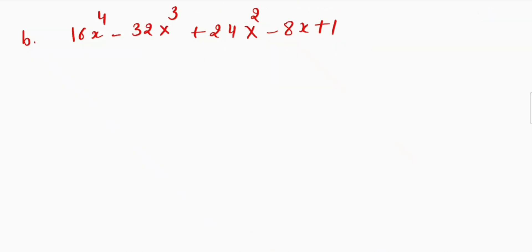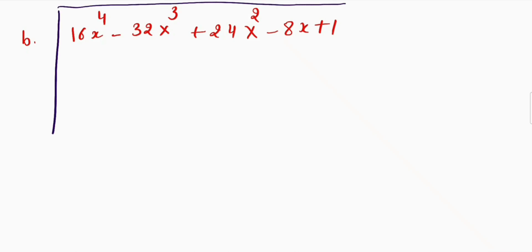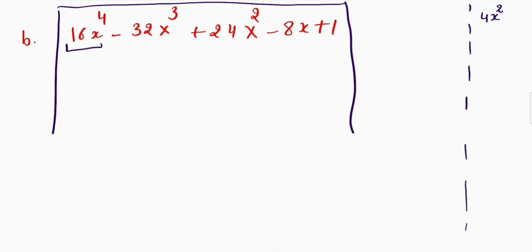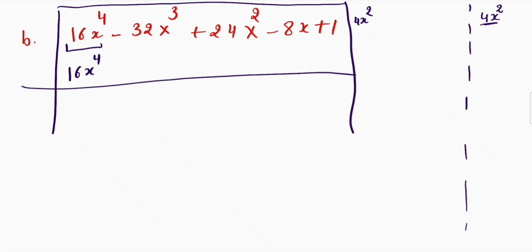Now let's see how we can find the square root of this algebraic expression step by step. First I will put these division lines here. We know 16 can be written as 4, and x raised to power 4 can be written as 4x². So I write 4x² here — if I take the square of this I get 16x⁴. This was the first step, and I will get 0 if I change the sign.